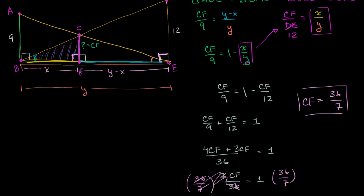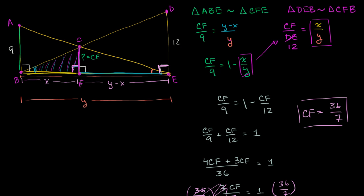This was a pretty cool problem. What it shows is that if you have two poles — one 9 units tall and one 12 units tall — and you drape strings from the top of each to the base of the other, the height where those strings intersect is always 36/7, or 5 and 1/7 units, regardless of how far apart the two poles are.